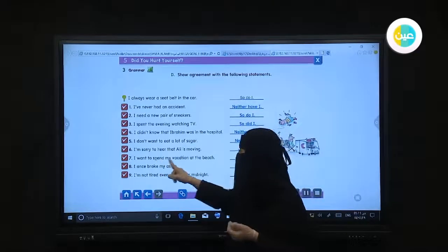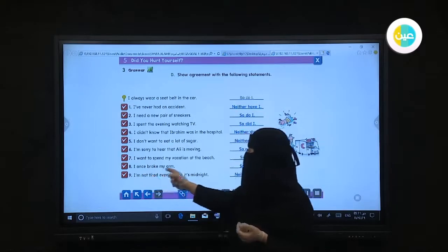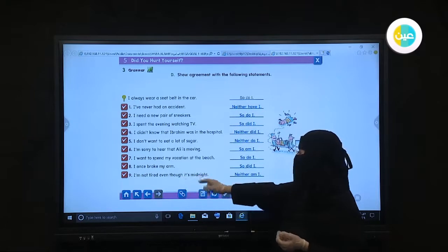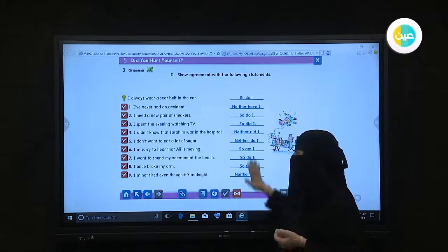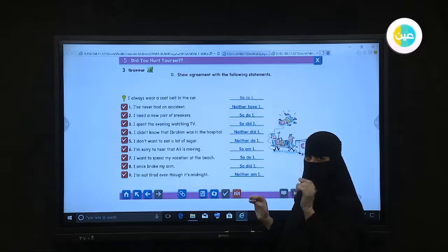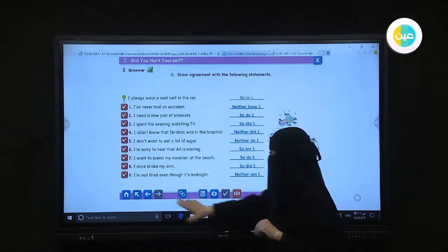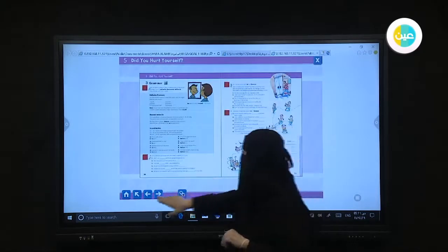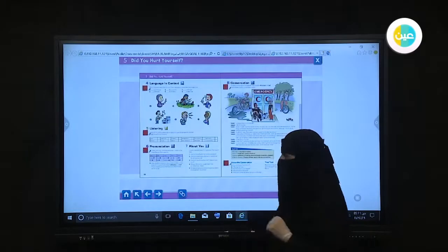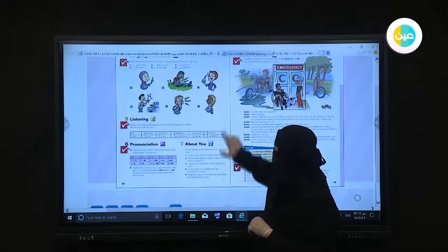I want to spend my vacation at the beach. So do I. I once broke my arm. So did I. I am not tired even though it's midnight. Neither am I. The conclusion from that: if your statement is negative, we use 'neither', and if it is affirmative agreement, we use 'so'. Okay, let's go to the other lesson. The new lesson for today is language in context.